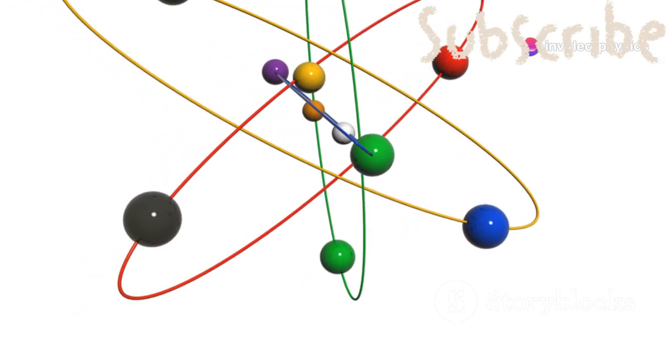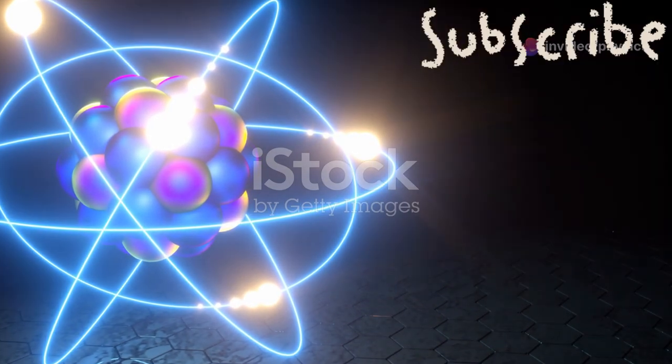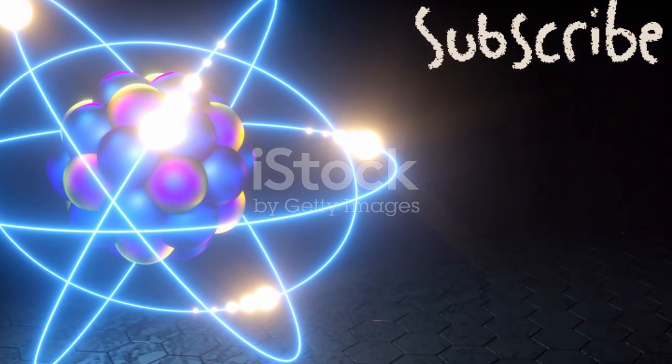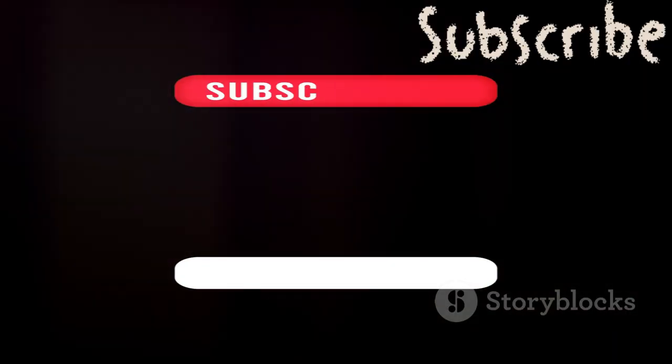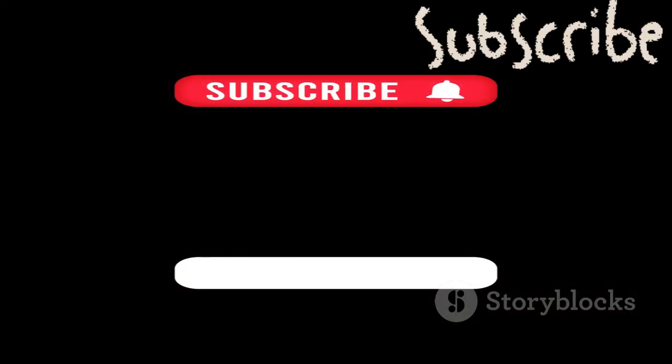So, there you have it. Atoms are made up of electrons, protons and neutrons, each playing a crucial role. Don't forget to subscribe and hit the notification bell for more cool science videos.